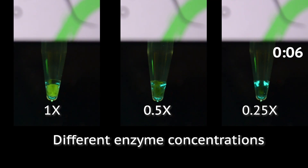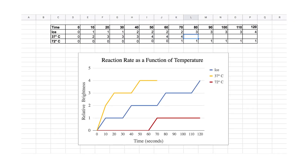Students will measure the baseline reaction rate and then will be asked to investigate how different conditions affect enzyme function. Students can develop their own hypotheses surrounding the effects of temperature, pH, concentration, and competitive inhibition. They then devise their own experimental approach, and the simple visual scale gives them quantitative data they can easily graph and analyze.